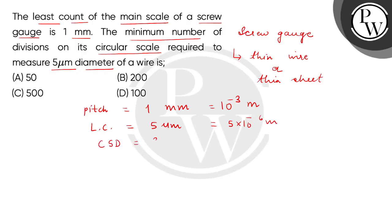Divisions in the circular scale. We have the expression: least count of screw gauge equals pitch divided by total number of circular scale divisions.